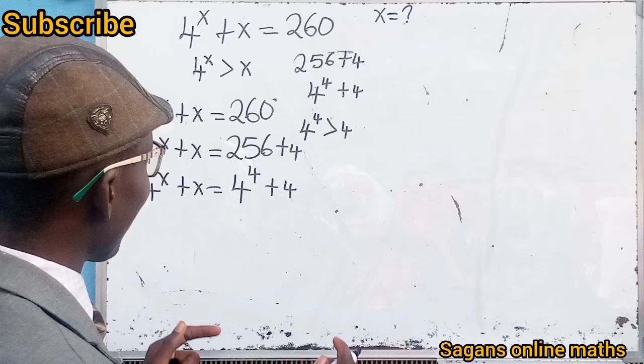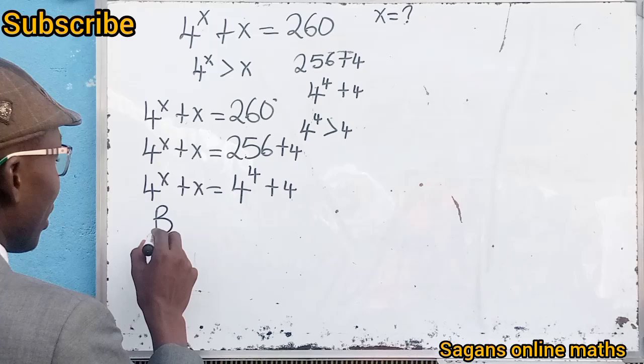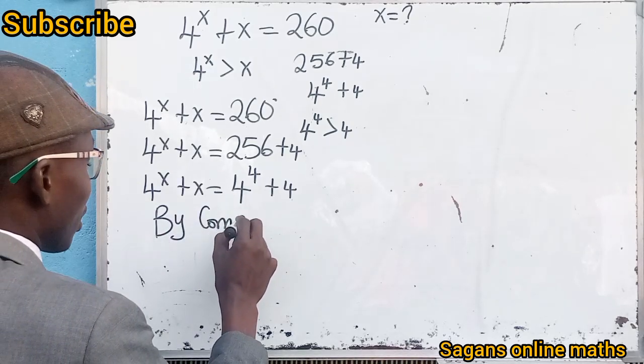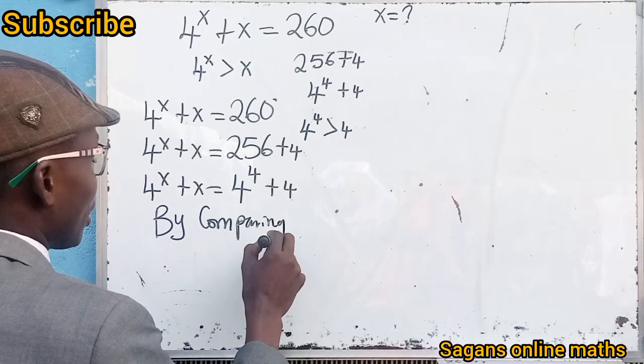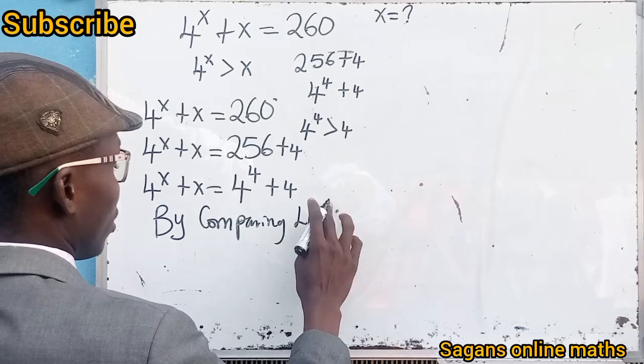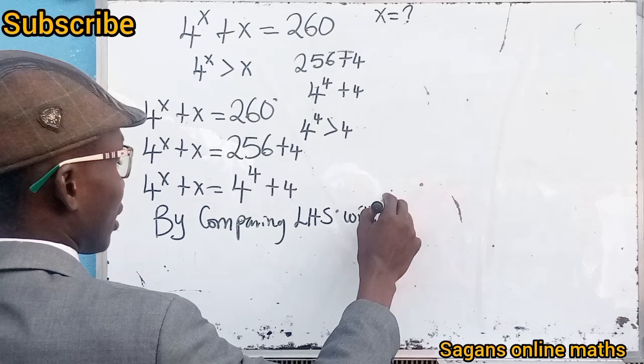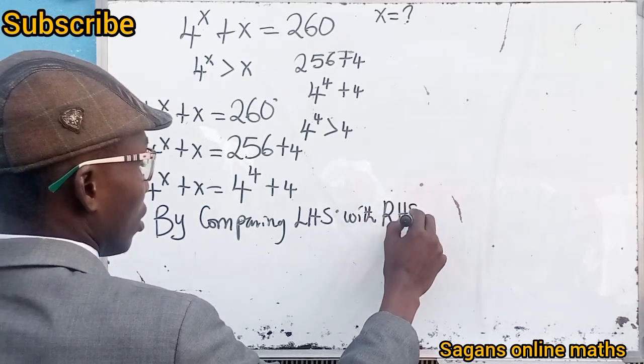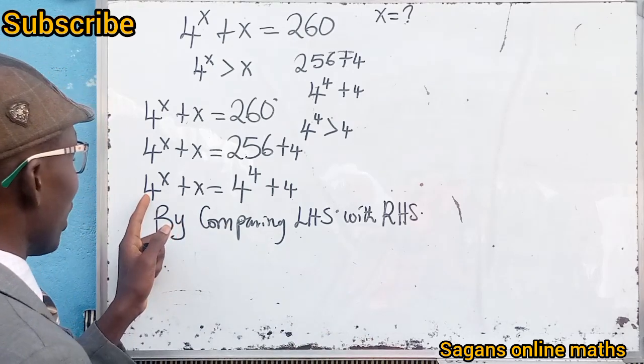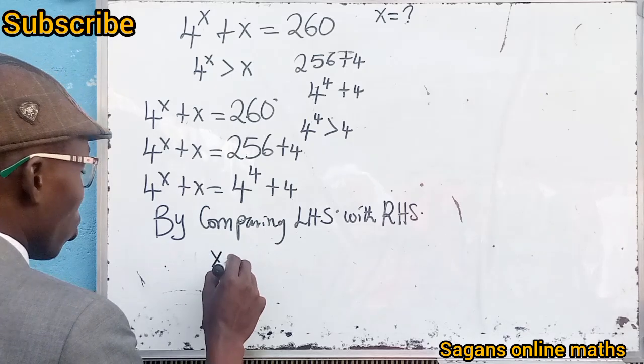By comparing the left-hand side with the right-hand side, we can see that x is equal to 4. This is the value of x that will satisfy this equation.